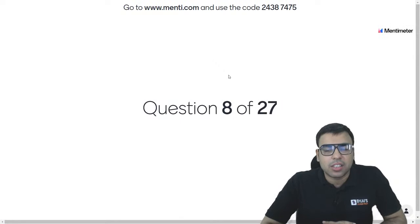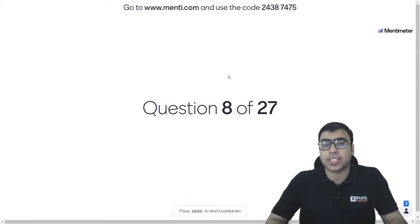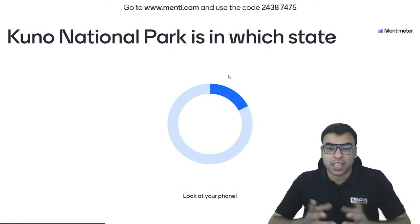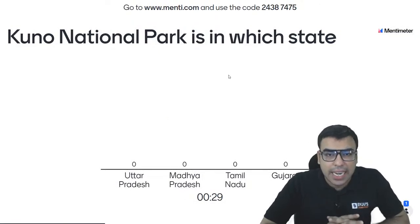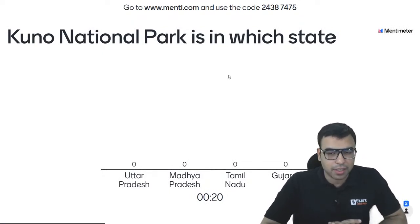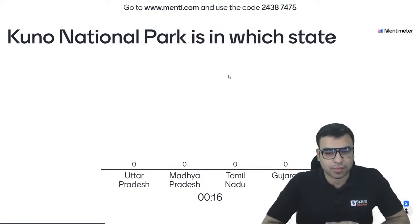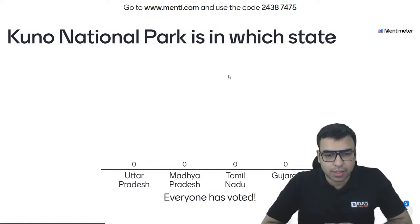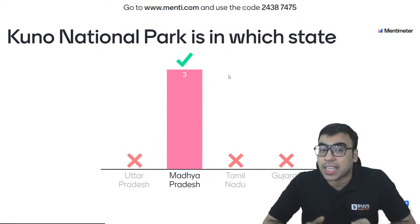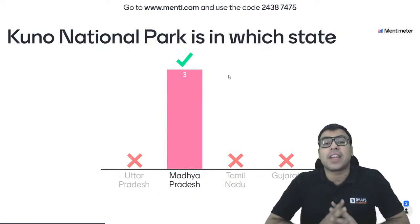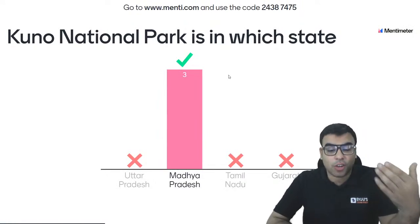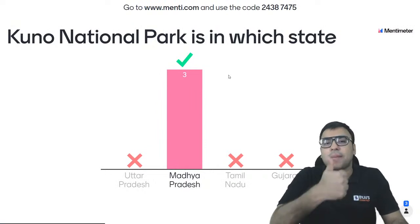Question number 8: since we are talking about Kuno National Park, in which state is it located? Options: Uttar Pradesh, Madhya Pradesh, Tamil Nadu, Gujarat. The right answer is B — Madhya Pradesh. Kuno Palpur National Park, or Kuno National Park, is in Madhya Pradesh, where the eight cheetahs from Namibia were brought. Namibia is a country in the African continent. B is the right answer. Please press the like button.